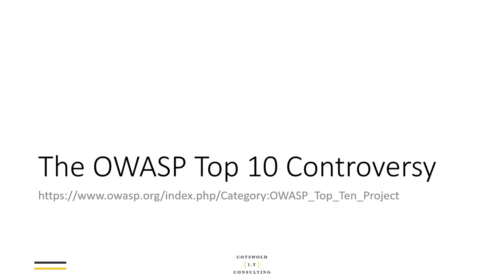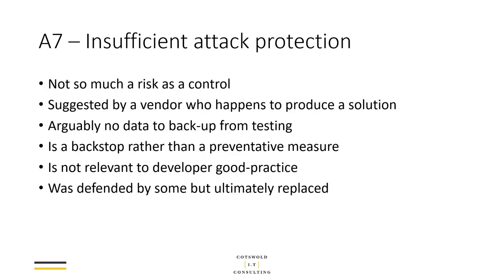We need to address the controversy of the OWASP Top 10. When the release candidate was published in 2017, the sticking point was A7: Insufficient Attack Protection. The issue — a bit like A10 in the approved list about insufficient logging and monitoring — is that it's not so much a risk as a control. On top of that, the suggestions came from a vendor who happened to produce an attack protection product. So of course it was seen as a bit of a conflict of interest — basically saying 'put this on the list so that everyone will buy my product.' Not that everyone would, but that was the danger of it.